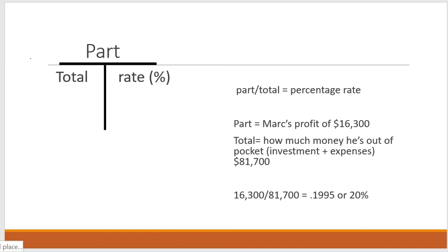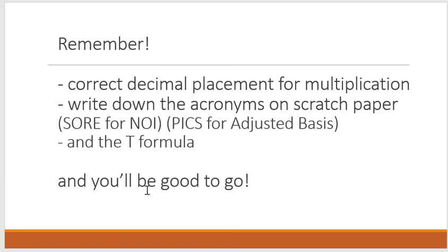So those are a couple of problems. I hope that breaking it down makes it a lot more simple. Remember correct decimal placement for multiplication — don't fly through these problems and miss one just because you didn't move the decimal over or put an extra zero. Always double check that. Write down the acronyms on a scratch piece of paper: SOAR for NOI, PICS for Adjusted Basis, and then that T formula. If you don't remember anything else from this video, just remember those things.